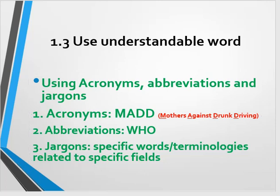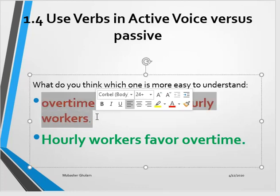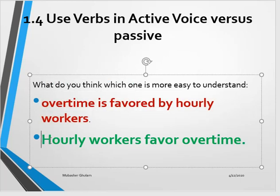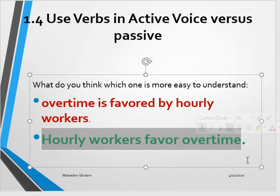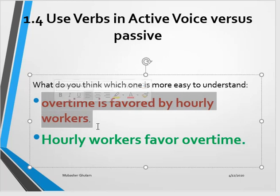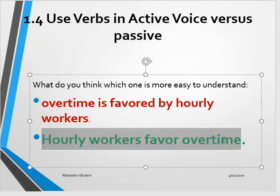The last and fourth way is using active voice instead of passive voice. For example, 'overtime is favored by hourly workers' — for a very simple audience, this passive sentence is a bit difficult, whereas the active version is quite easy. Using active voice instead of passive voice can facilitate your audience. There is no hard and fast rule that you can't use passive voice — you can use it according to situation and requirement — but it is suggested that if you want to keep your message clear and easy, it's better to use active voice.